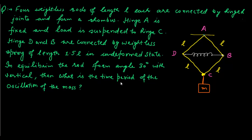What is the time period of the oscillation of the mass? Here we have the situation: four rods each of length L, and the spring with length 1.5L. The angle which these rods make with the vertical is given as 30 degrees — let this angle be alpha naught, equal to 30 degrees. This angle corresponds to the equilibrium position.